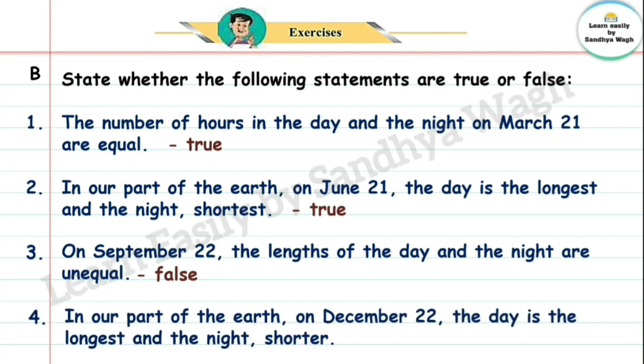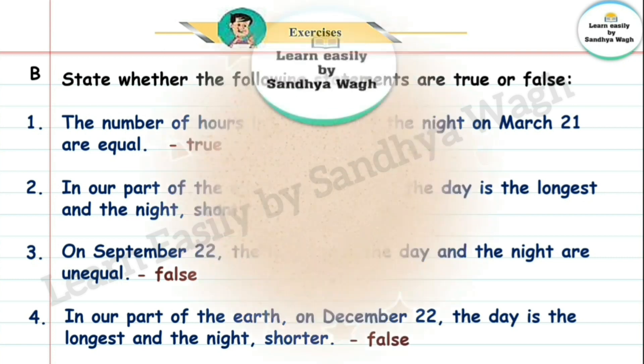4. In a part of the earth on December 22, the day is the longest and the night shorter. 22 December la sarvat muttha divas Wa sarvat lahan ratras thi. False.